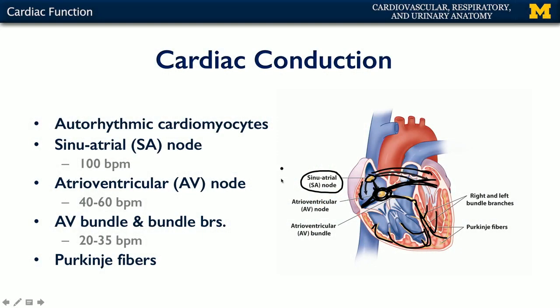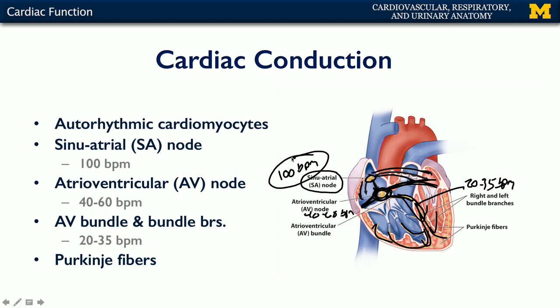Each of these regions has its own intrinsic rate of depolarization. The SA node, as mentioned, is 100 beats per minute. The AV node is about 40 to 60 beats per minute. The AV bundle and bundle branches have an intrinsic rate of about 20 to 35 beats per minute. This is the intrinsic rate, so there aren't many people who will actually have a resting heart rate of 100 beats per minute — that's rather fast.